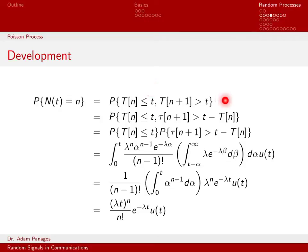That's an equivalent way to write this probability, and it's useful because we're now expressing things in terms of random variables whose distributions we know. The arrival time sequence T_n has the Erlang density, and the inter-arrival time sequence tau has an exponential distribution. So we're working with known distributions to actually perform this computation.